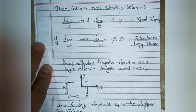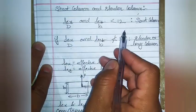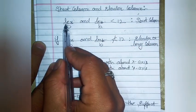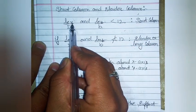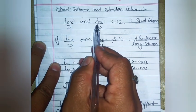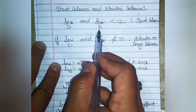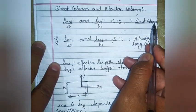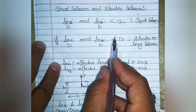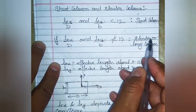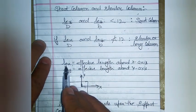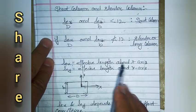The effective length of a column depends upon the support conditions. For a short column, if the effective length about the X-axis divided by D, and the effective length about the Y-axis divided by B, is less than 12, it is termed as a short column. If it is not less than 12, it is called a slender or long column.